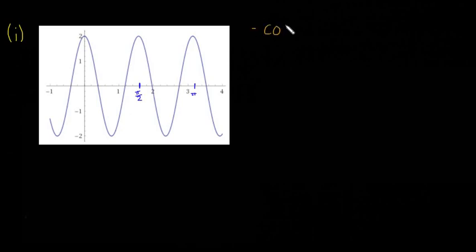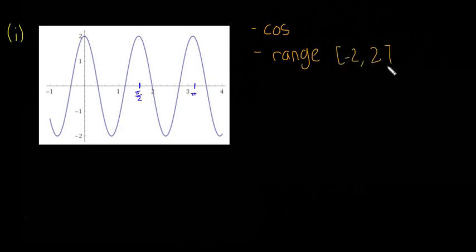We can say this is a cos graph because it starts up at the top. The range goes from plus 2 to minus 2, so the range is minus 2 to 2. That means we can say it's 2cos — so there's a number 2 before the cos.